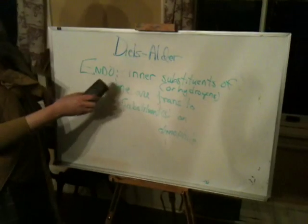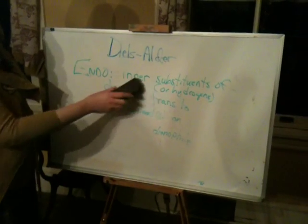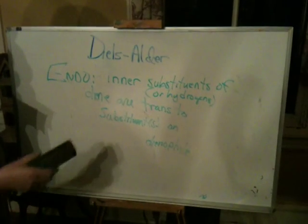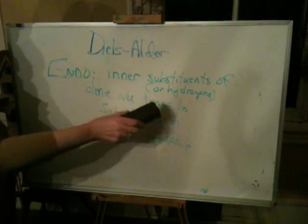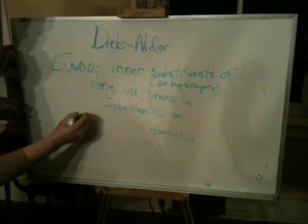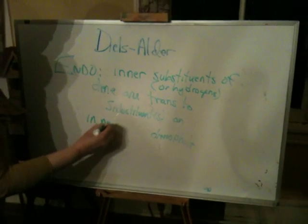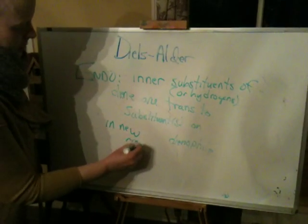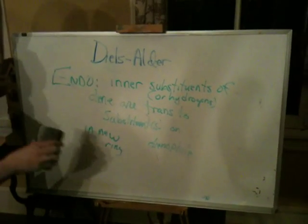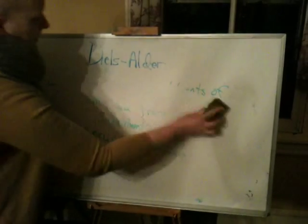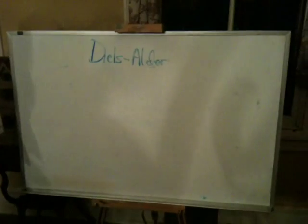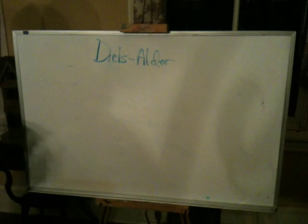So this is really important because we had a little confusion about this. The inner substituents or hydrogens of the diene have to be trans to the substituents on the dienophile in the new ring. But this is also true in the transition state. Of course, exo is just the opposite of that — you'd say cis instead of trans.